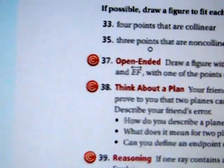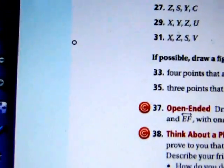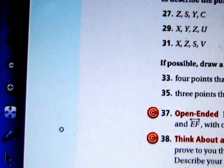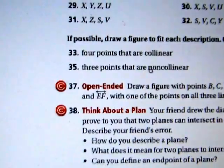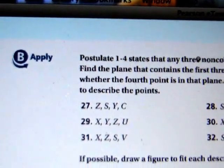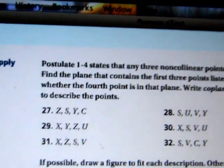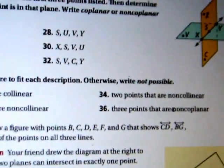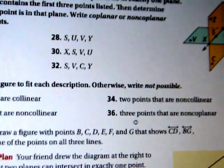35. Three points that are non-collinear. That's pretty simple. All you've got to do is draw a point here, another one over here, and another one over here. As long as they're not in a straight line, you've got three non-collinear points. It's pretty easy. 36. Three points that are non-coplanar. Well, that's impossible. We can go back up to what it says up here. Postulate 1.4 says that any three non-collinear points lie in exactly one plane. In other words, if they lie in one plane, they are coplanar. So 36 is saying to draw three points that are non-coplanar, it's impossible. Any three points will always be coplanar.